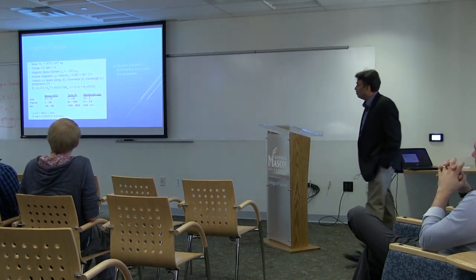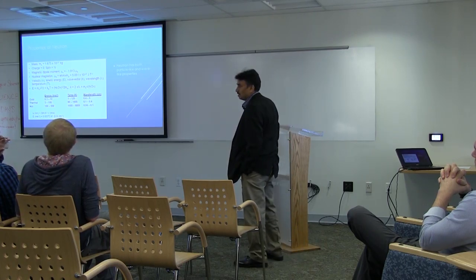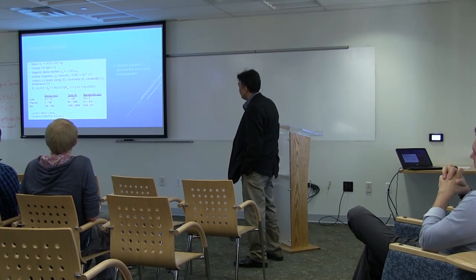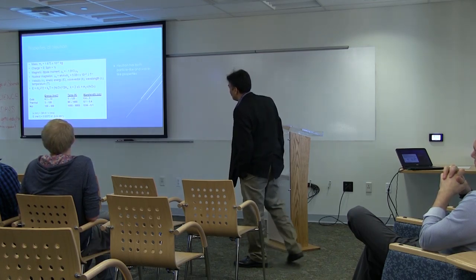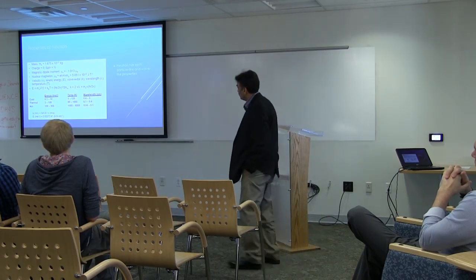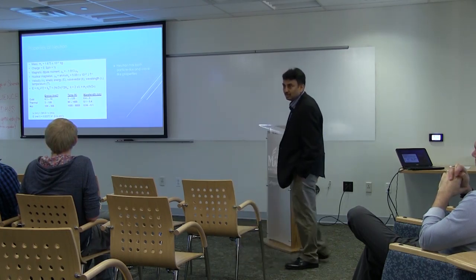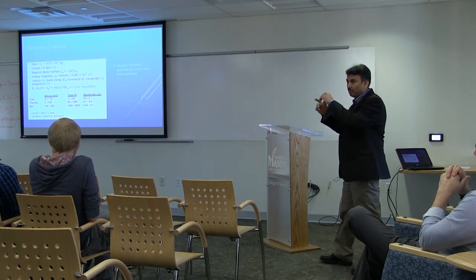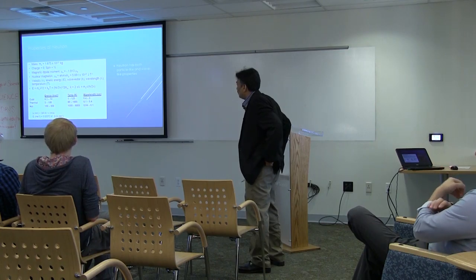Let us start with the basic properties of a neutron. A neutron is a fundamental particle residing inside a nucleus and it is neutral — it has no charge. It has a mass of 1.7 times 10 to the minus 27 kilograms, it is heavier than an electron but has no charge, and it has spin one-half. Spin is related to angular momentum — like a spinning top has spin angular momentum, likewise the neutron does too.